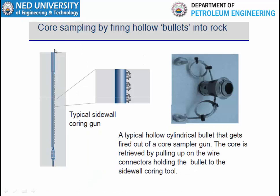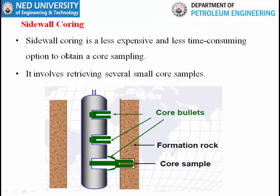In sidewall coring, the core is collected from the sidewall after the well has already been drilled. The tool is run inside the wellbore. A typical sidewall coring gun can have around 50 bullets. These bullets collect a small core sample about one inch in diameter. The bullets are fired into the formation and capture the core sample, which is retrieved by pulling up on the wire connector holding the bullet to the tool.